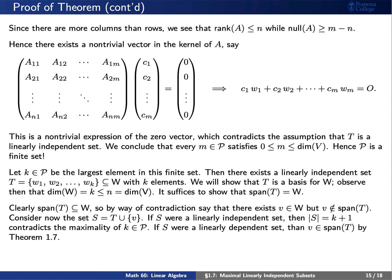Let S be T union the vector v. We ask: is S a linearly independent set? According to theorem 1.7, if S were linearly dependent, then v must be in the span of T. But we constructed v so that it is not in the span of T, so S must be linearly independent. But S is a linearly independent set contained in W with k plus 1 elements, contradicting our assumption that k was the largest element in script P. Hence the span of T must equal W.